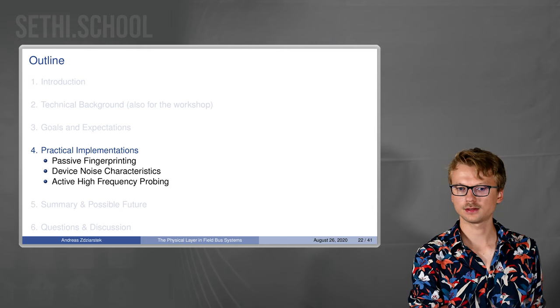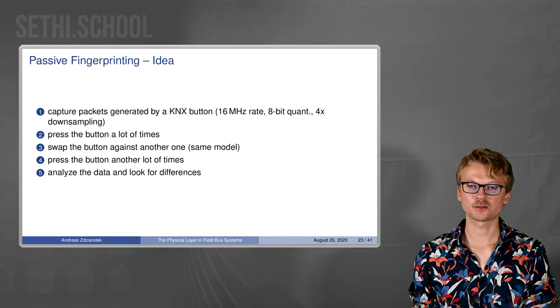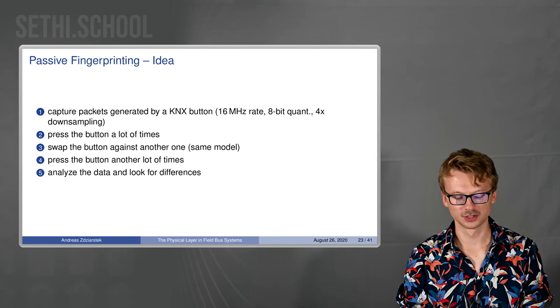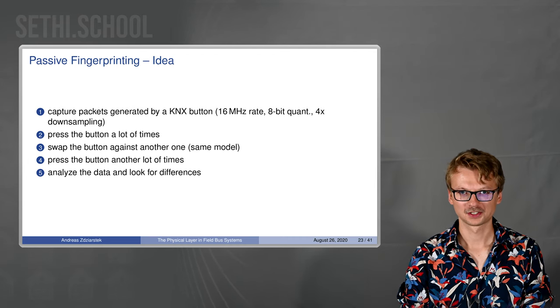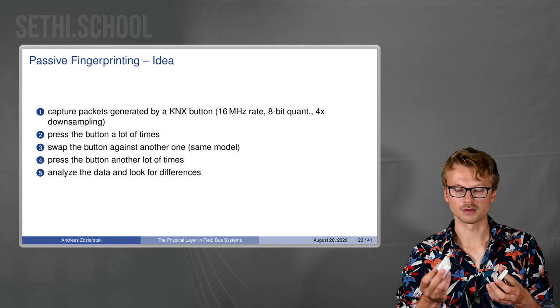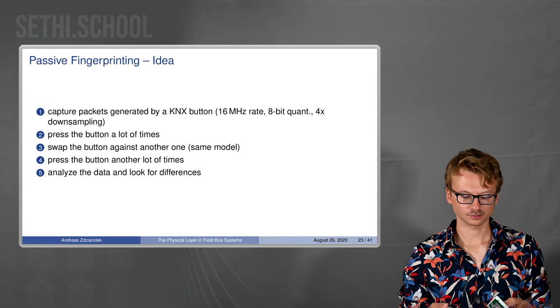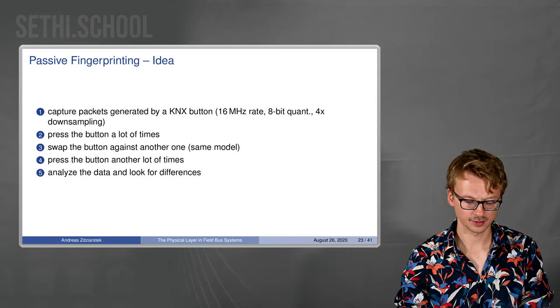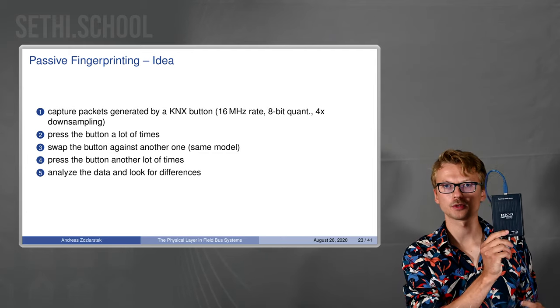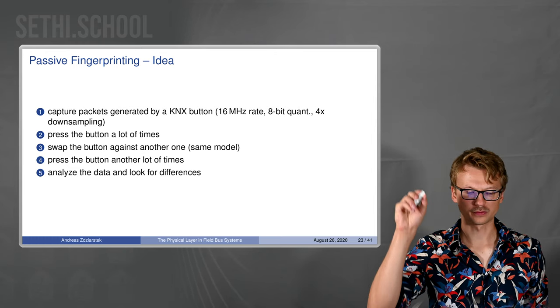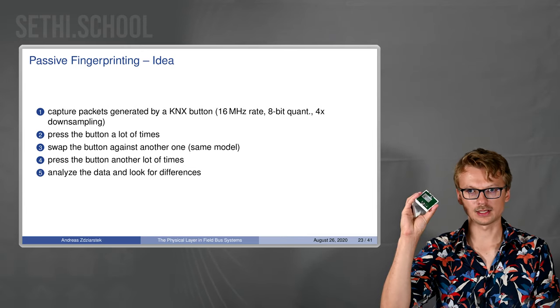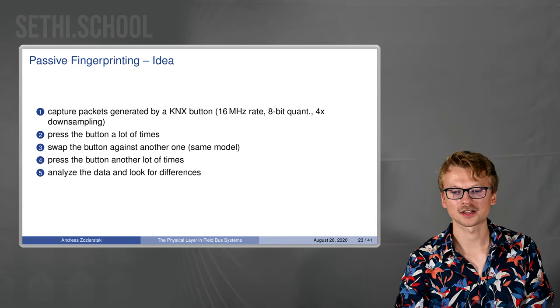Now the practical implementations of these ideas. The more detailed idea for passive fingerprinting: we want to capture packets generated by a KNX button and then try to find out if it's this one or that one. As you can see, these are both the same model but two different devices. We want to find out when we connect this one to a KNX network and then use such a nice USB oscilloscope to capture the packet sent whenever we push one of these buttons. We want to do it a lot of times, push these buttons and then swap out against the other switch and then try to find some differences in the data.